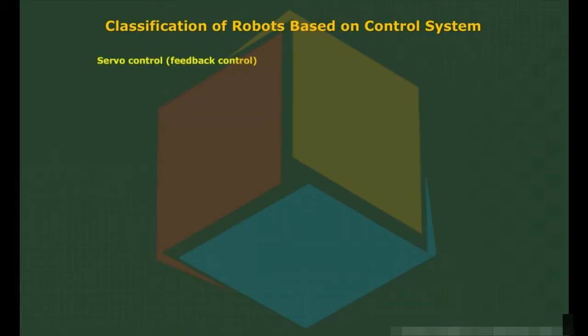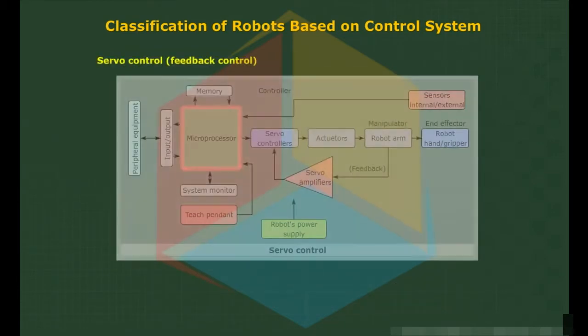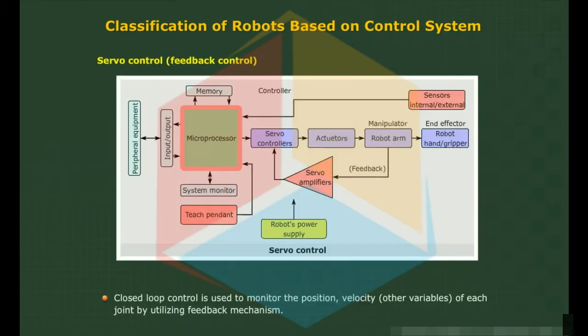Servo Control, also called Feedback Control or Closed Loop Control, is used to monitor the position, velocity, and other variables of the robot by utilizing a feedback mechanism.